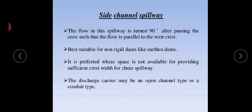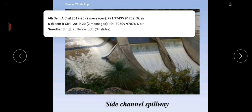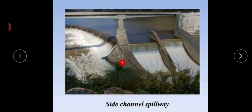In the side channel spillway, the flow is turned 90 degrees after passing the crest such that the flow is parallel to the crest. It is suitable for non-rigid types of dams such as earthen dams, and is preferably constructed where space is not available to provide sufficient crest width. The discharge carrier may be an open type or a conduit type.